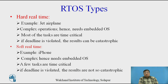RTOS is mainly classified as hard real-time RTOS and soft real-time RTOS. Hard real-time is used in jet airplanes where operations are very complex and most tasks are time-critical — if a deadline is violated, the results can be catastrophic. Soft real-time RTOS can be used in devices like the iPhone, which are complex but only a few tasks are time-critical — if a deadline is violated, the results are not catastrophic.